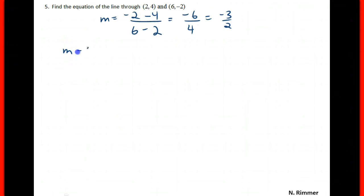So if you have a slope of negative 3 halves, take either of the points, take 2, 4, into the point slope formula, y minus y1 is m times x minus x1.